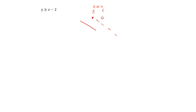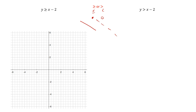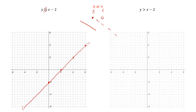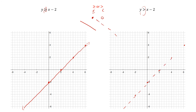So as we look at these two: y is greater than or equal to x minus 2, and y is greater than x minus 2. We're going to look at the difference between these two graphs. For x minus 2, our y-intercept is negative 2 and the slope is 1, so we go up 1 over 1, up 1 over 1, up 1 over 1. Since it's an 'or equal to,' it's a solid line. For the second one, same thing — we start at negative 2 and go up 1 over 1 repeatedly — but since it's just greater than, it's going to be a dotted line.